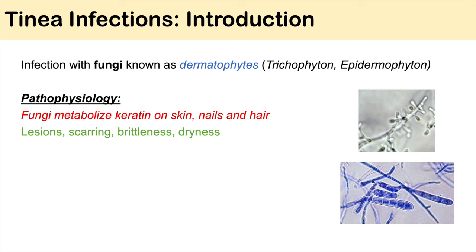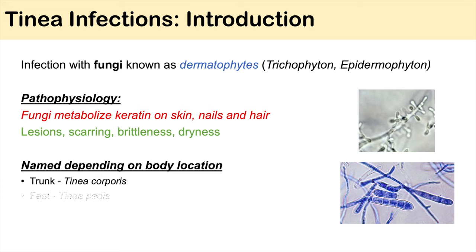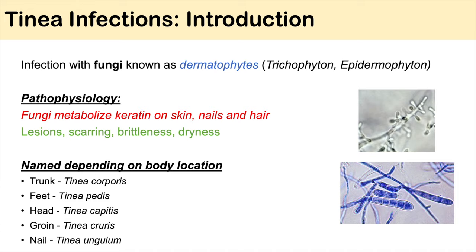Tinea infections are named depending on body location. An infection on the trunk is tinea corporis. An infection on the feet is tinea pedis. An infection on the head is tinea capitis. An infection of the groin is tinea cruris. And an infection of the nail is tinea unguium. We're going to talk about each of these in more detail in the next couple of slides.